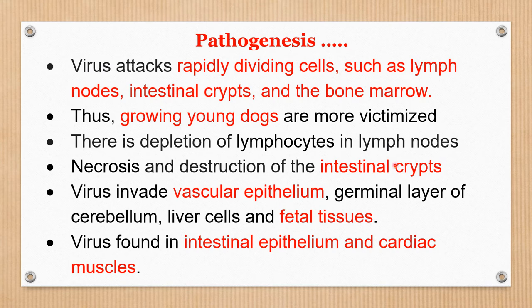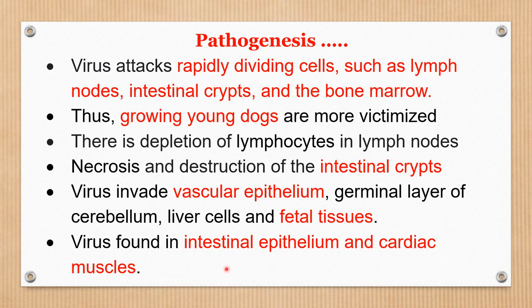There is depletion of lymphocytes in the lymph nodes, and necrosis and destruction of the intestinal crypts. The virus invades the vascular endothelium, germinal layer of the cerebellum, liver cells, and fetal tissues — it can even infect the fetus, so a pup may suffer from the disease after birth. The virus is mainly found in two organs: the intestine and the heart. Virus present in the intestinal epithelium causes enteritis, and in cardiac muscles causes myocarditis — together forming the syndrome of parvovirus infection.